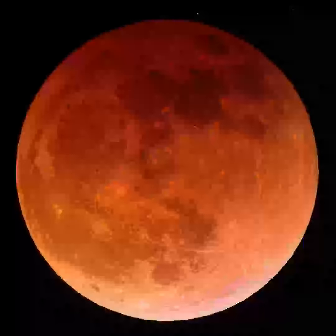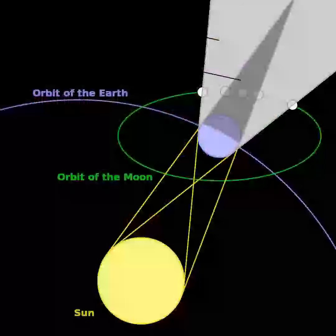The reddish coloration arises because sunlight reaching the Moon must pass through a long and dense layer of Earth's atmosphere, where it is scattered. Shorter wavelengths are more likely to be scattered by the air molecules and small particles.